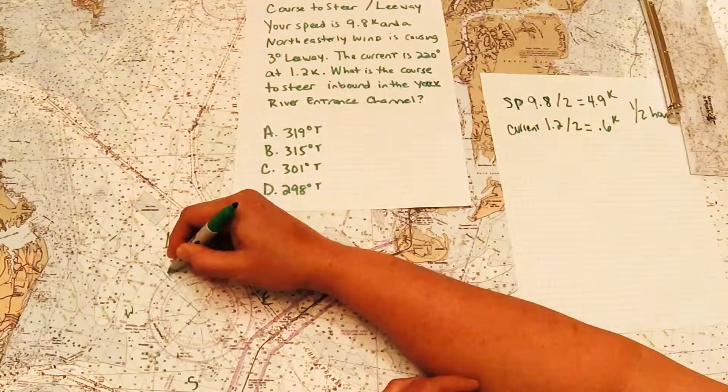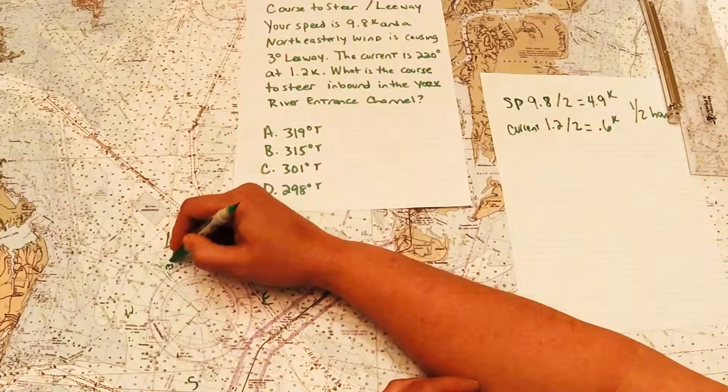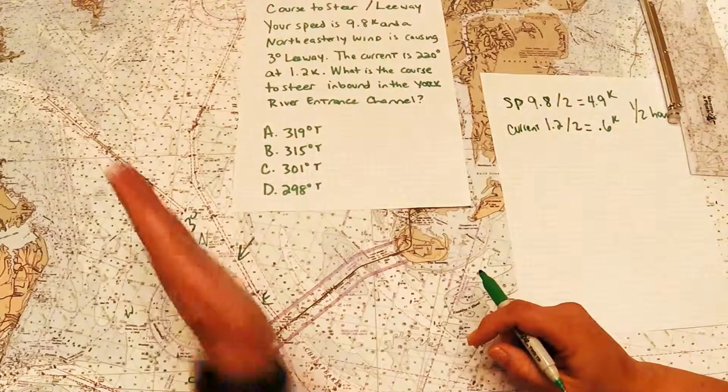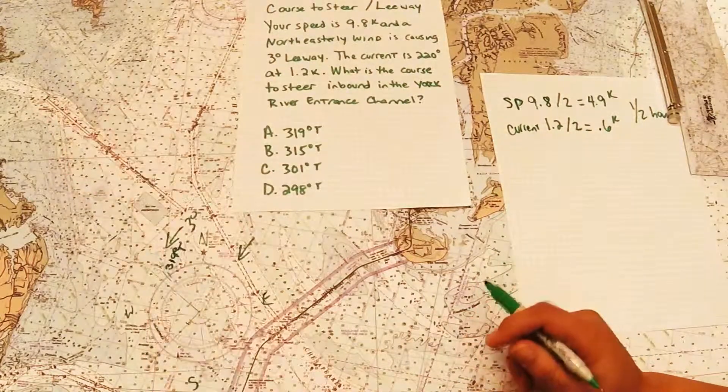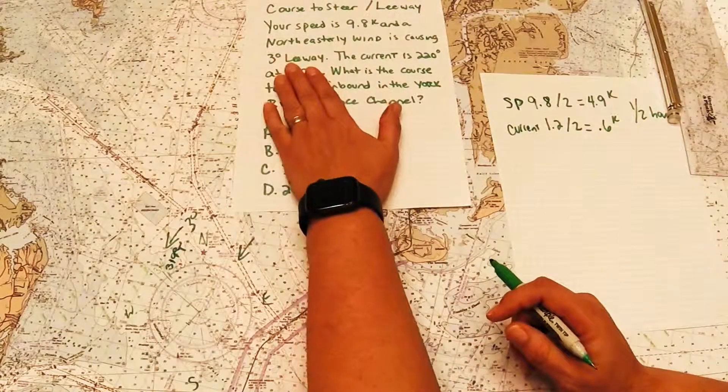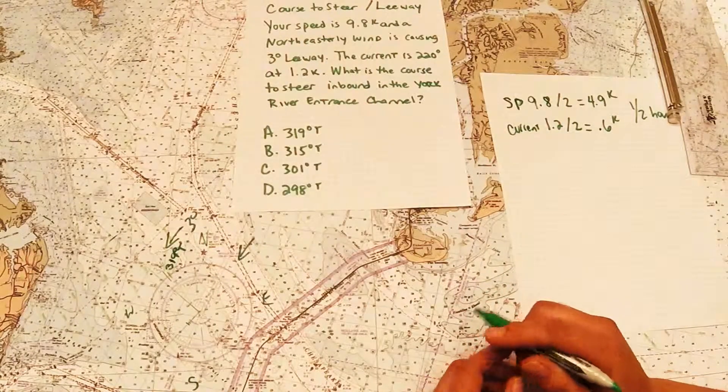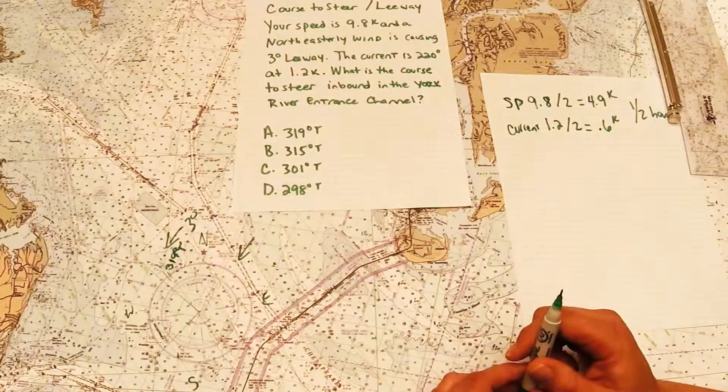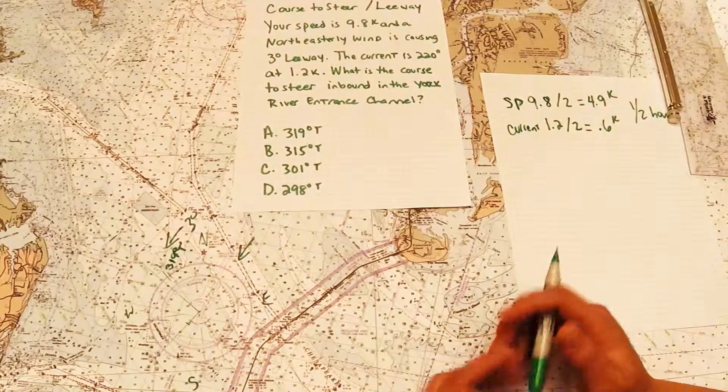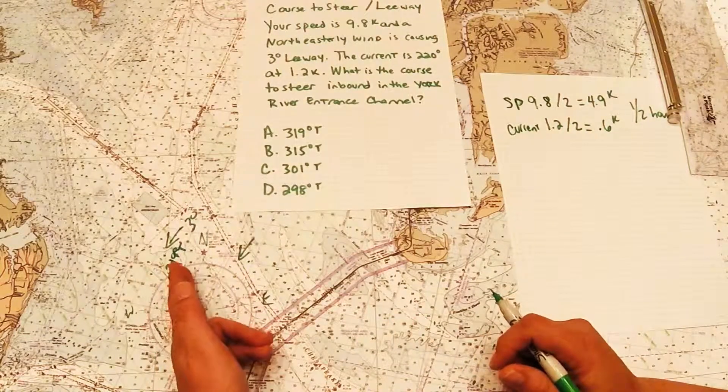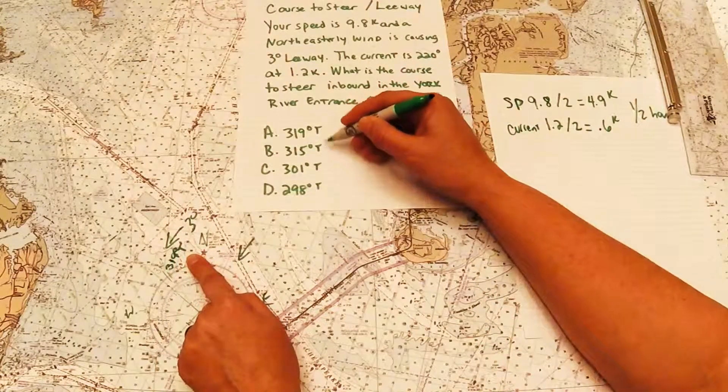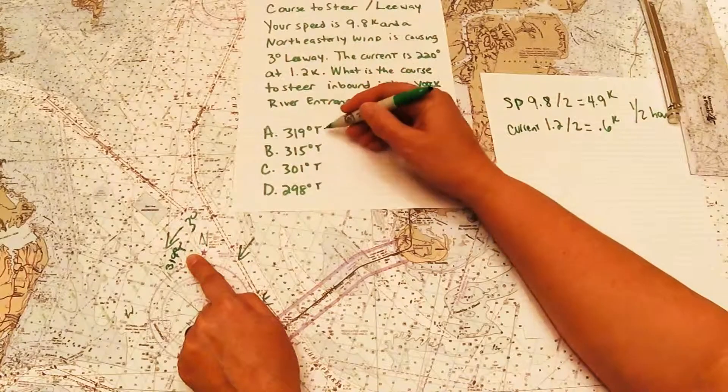So what I would steer is 319 degrees true in order to make 309 with these particular circumstances, with a current of 220 at 1.2 and a northeast wind at 3 degrees. So 319 is my final in true. When you look at your answers, make sure they are also in true. So I would choose A.